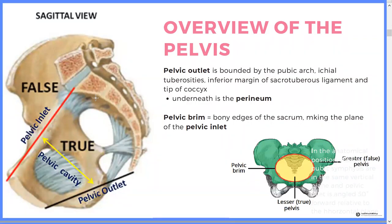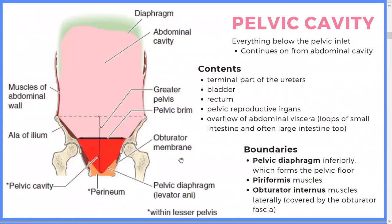The overview: make sure you know what structures make up the lesser pelvis and the greater pelvis, and the difference between the pelvic outlet and pelvic brim, as well as the contents — the boundaries and anatomical spaces. In terms of contents, we've got the terminal part of the ureters, bladder, rectum, all the pelvic reproductive organs, and overflow of some abdominal viscera — basically small loops of bowel.